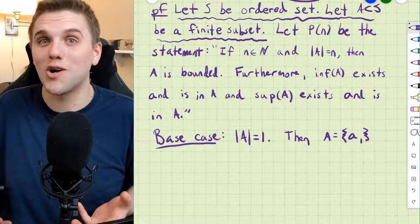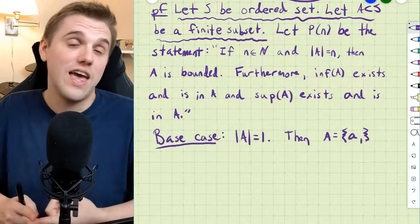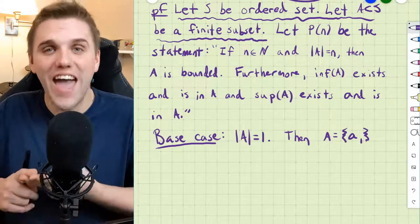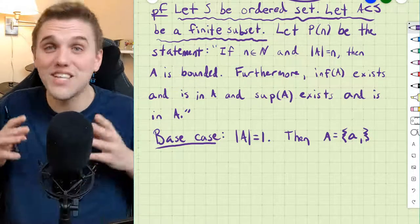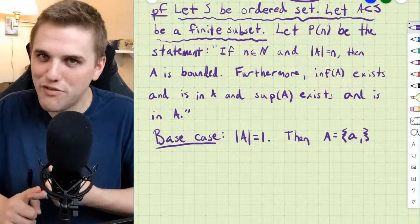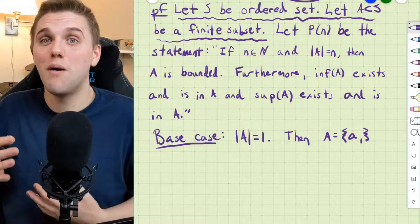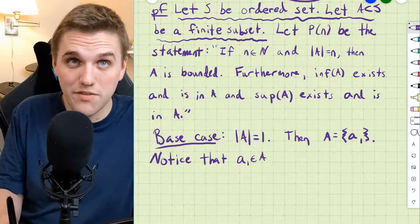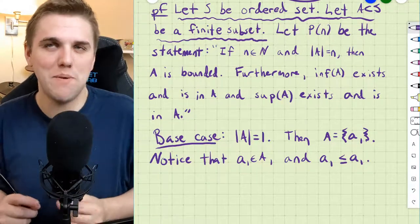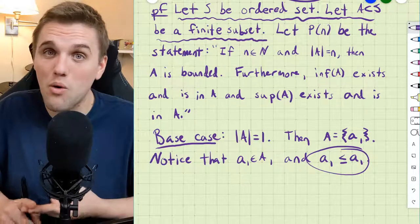Now we need to make sure the base case works. Is it true that A is bounded, that the infimum of A exists and is inside A, and that the supremum of A exists and A contains it as well? Luckily, we only have one element to work with. Notice that a₁ is an element of A, and notice that a₁ ≤ a₁. That shows that a₁ is both an upper bound and a lower bound to A.